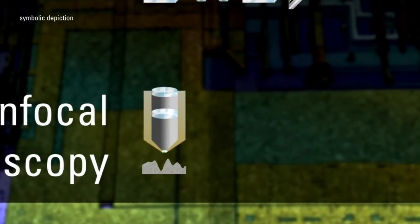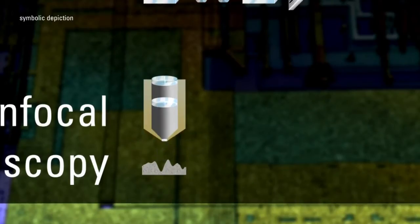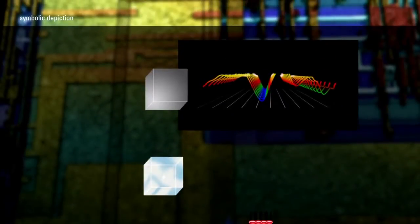With confocal microscopy, the sample is scanned vertically so that every single point on the surface passes through the focus and light outside the focal plane is eliminated.